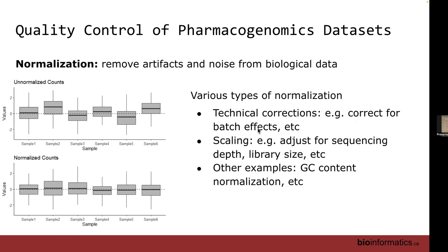Here are some examples of things you may want to normalize for. Something we'll look into in more detail is batch effects. Other things include scaling — when doing sequencing, you can have high coverage by sequencing a read five times or sequence it just once, and you have to account for that difference in coverage. Library size is another factor. It all boils down to the data you're using and the question you're asking.